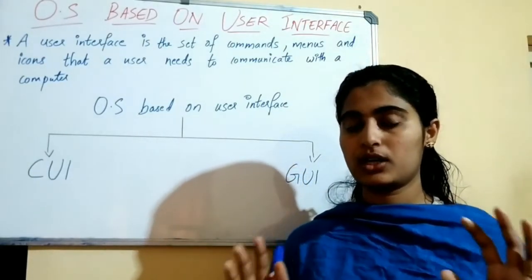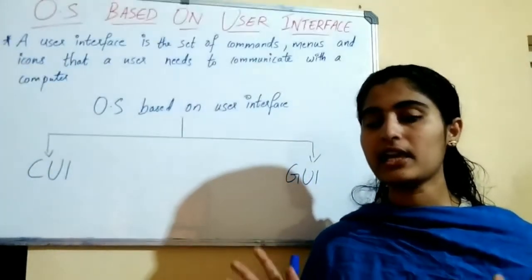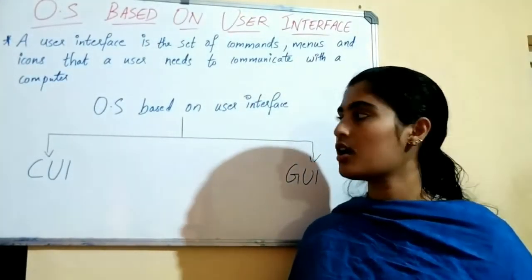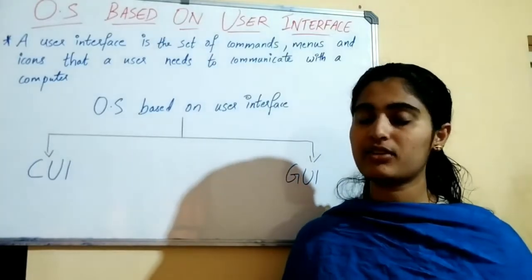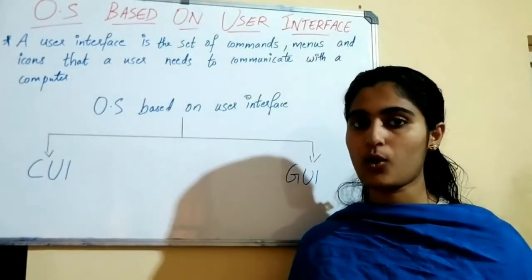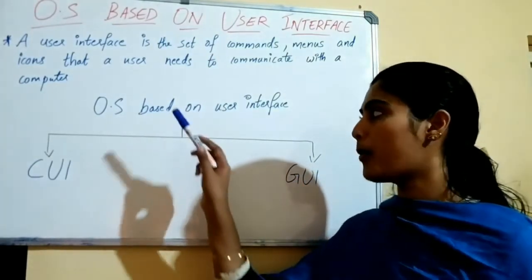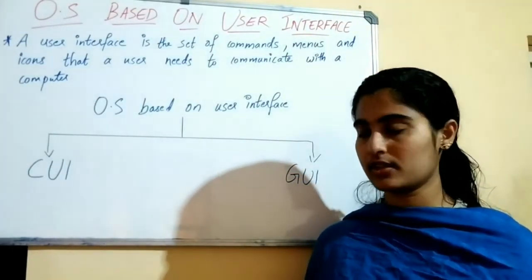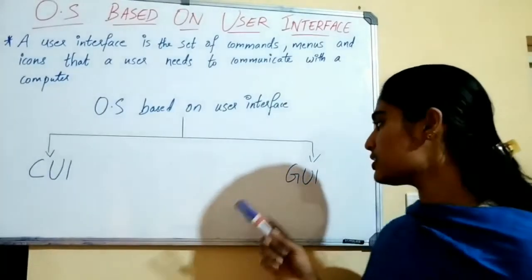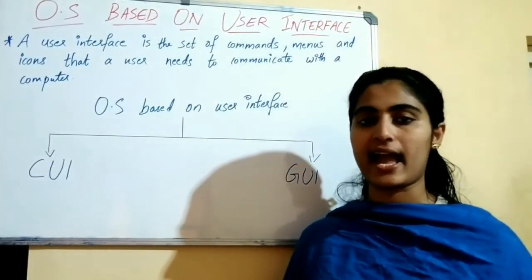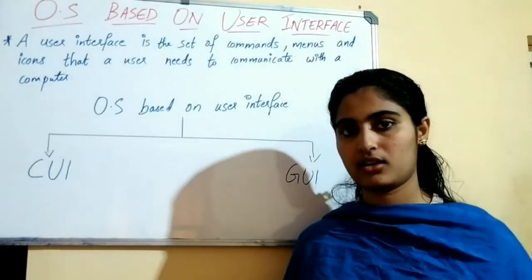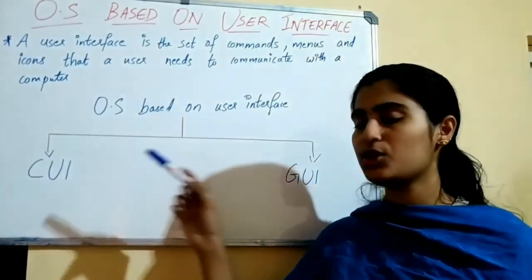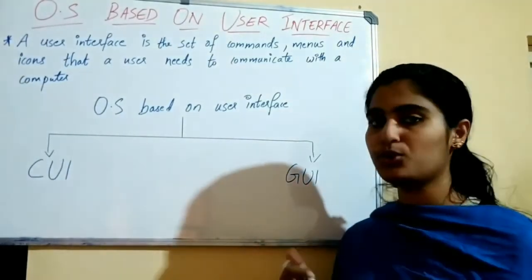The operating system is divided into two types based on user interface. Operating systems based on user interface are of two types: CUI and GUI. We will be studying about CUI and GUI in detail.